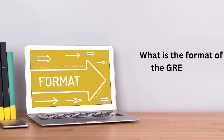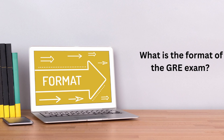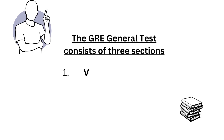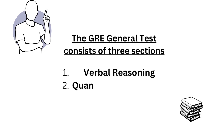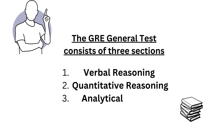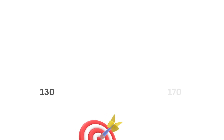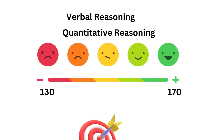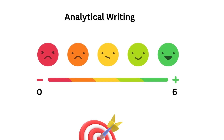What is the format of the GRE exam? The GRE general test consists of three sections: verbal reasoning, quantitative reasoning, and analytical writing. The verbal and quantitative sections are scored on a scale of 130 to 170, while the analytical writing section is scored on a scale of 0 to 6.